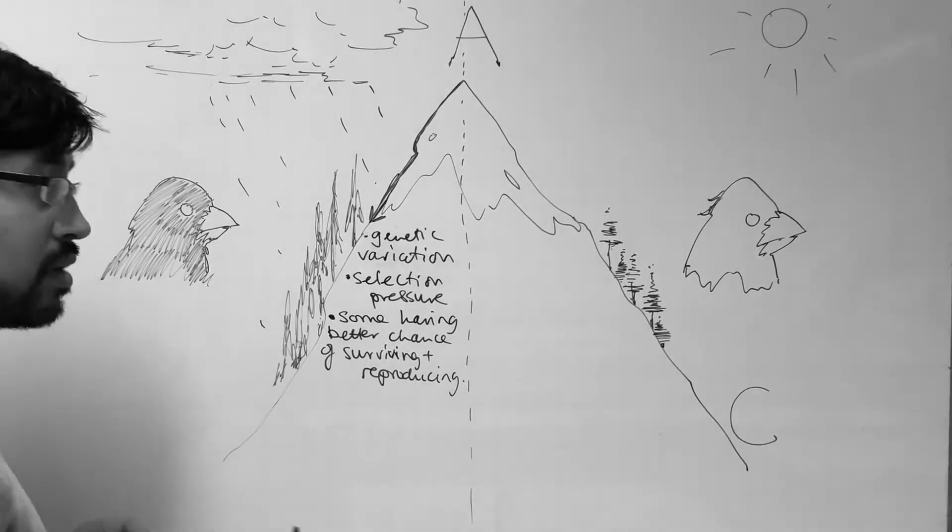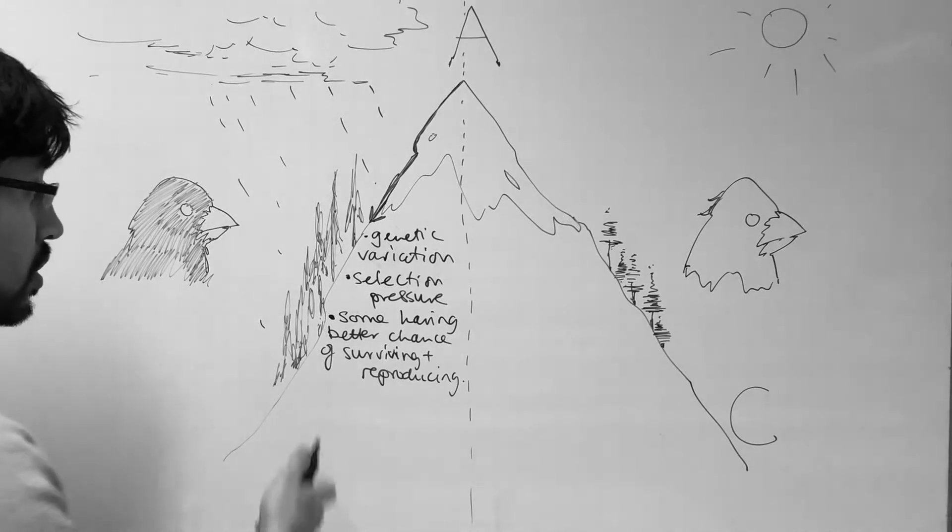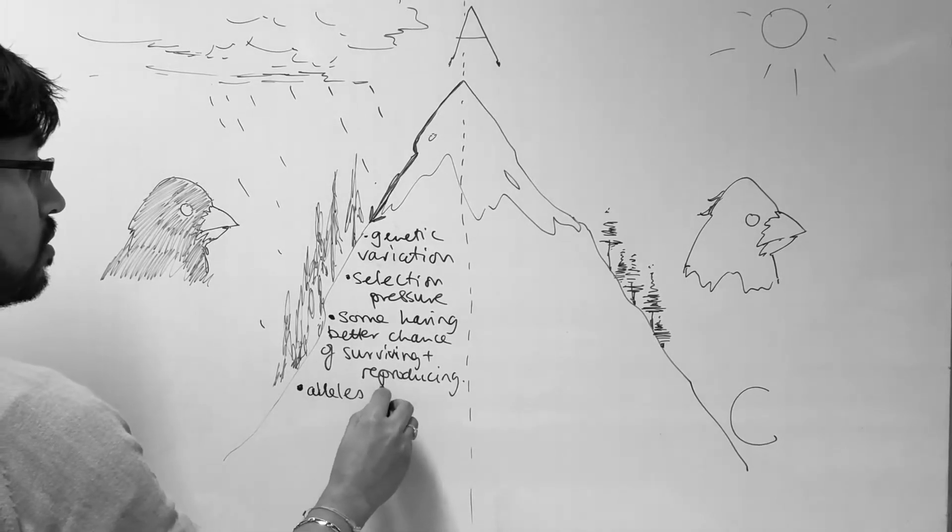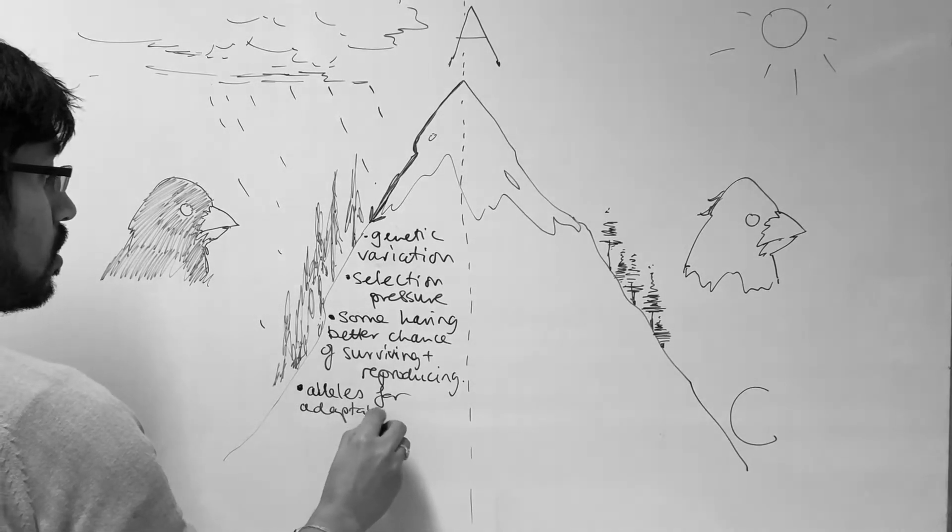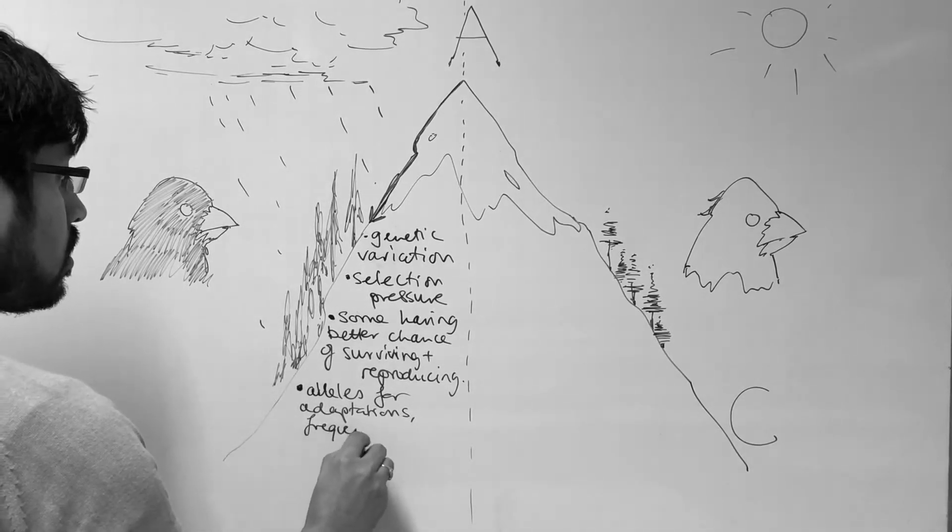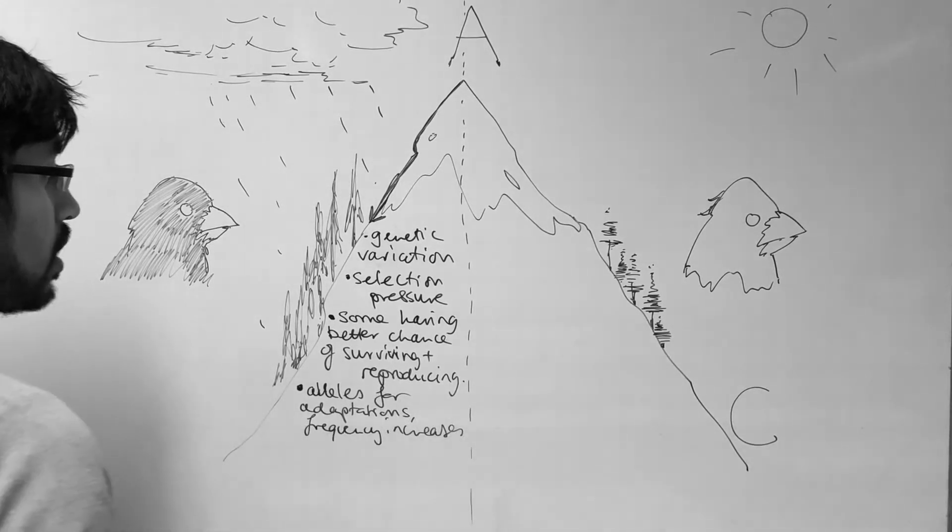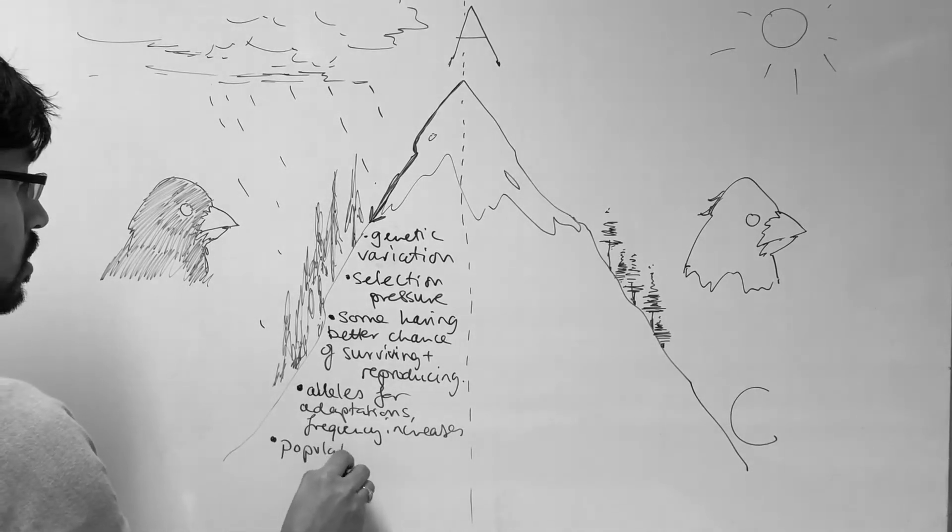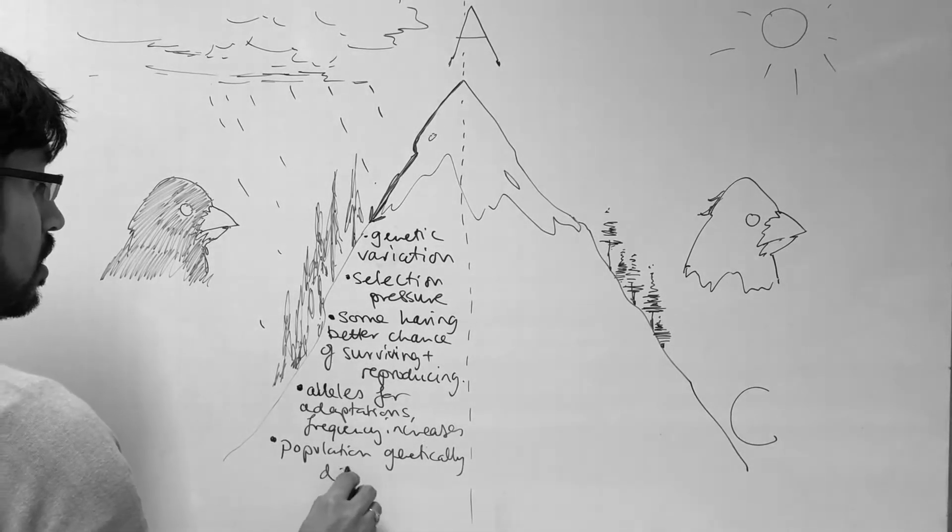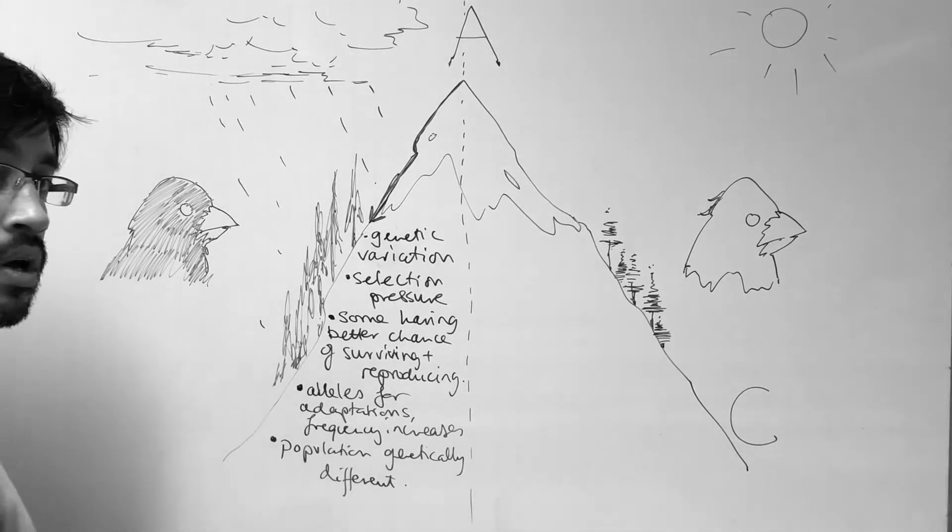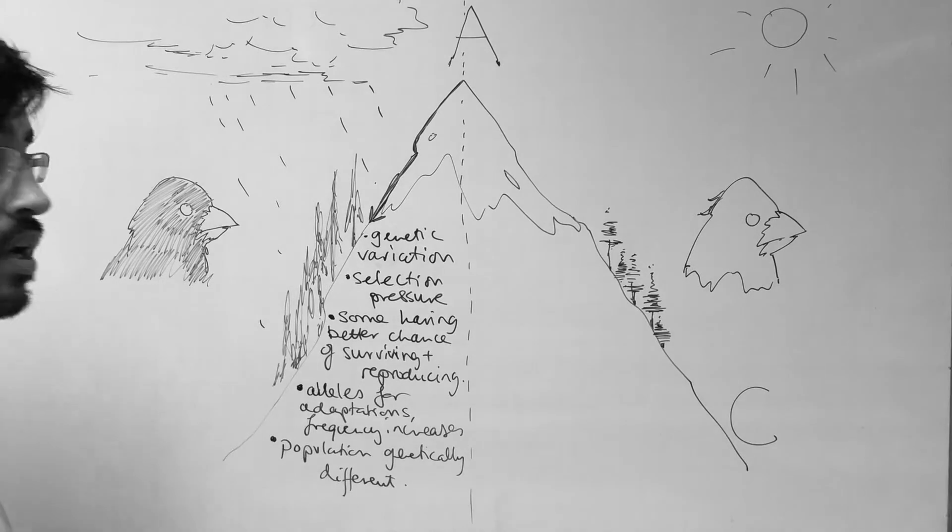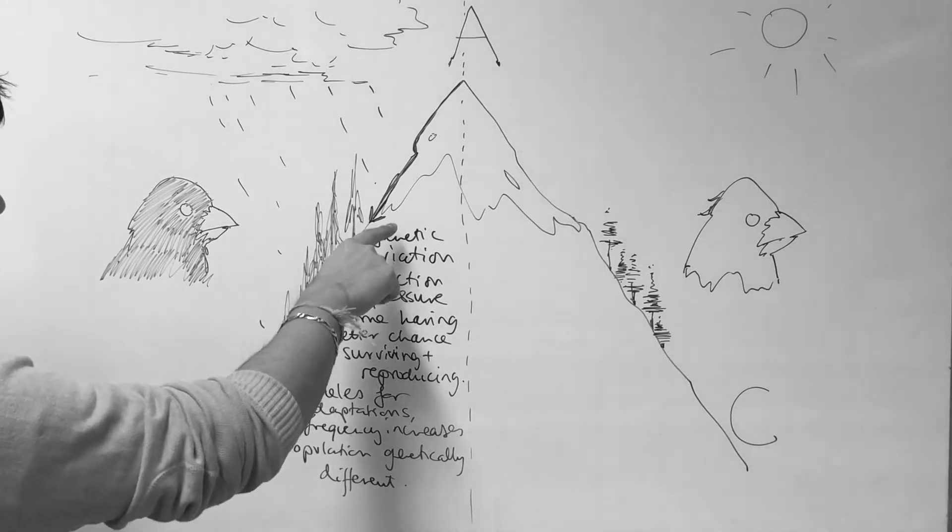The organisms that survived and reproduced pass on their alleles to the next generation. Alleles for adaptations, their frequency increases. Population becomes genetically different. So that explains how population might undergo genetic change even over a few generations. That is the process of evolution.